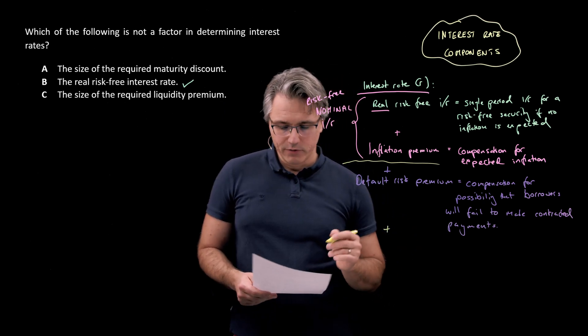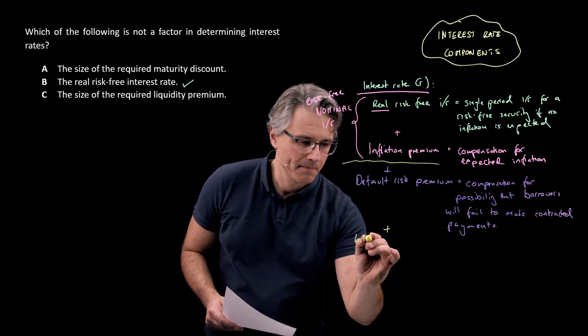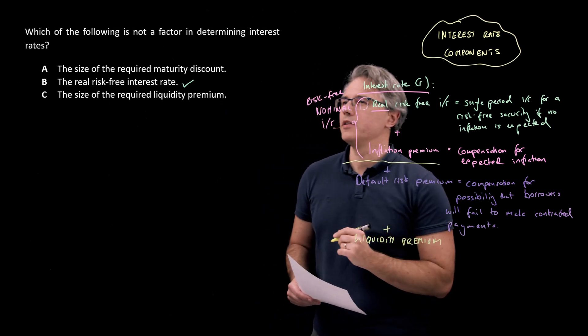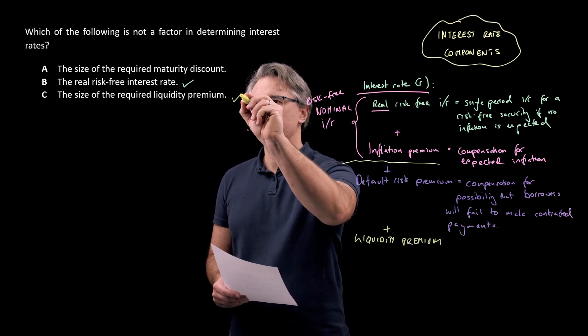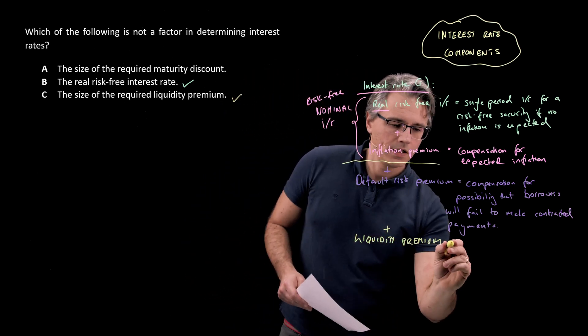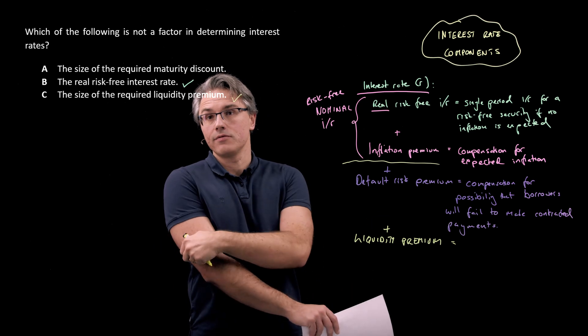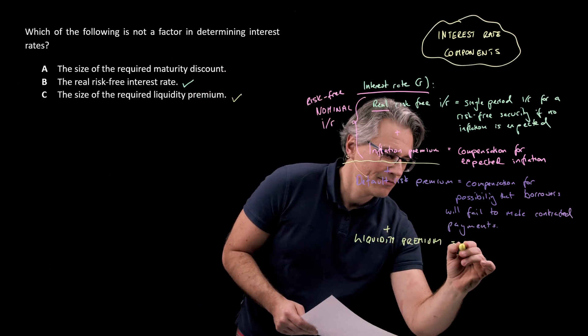Okay. What's next? Well, the next one, and there's just two to go here is something called liquidity premium. And this is definitely one of the listed elements, the size of the required liquidity premium. So this is going to be correct because it is a determinant which we take into account when setting interest rates or required rates of return.